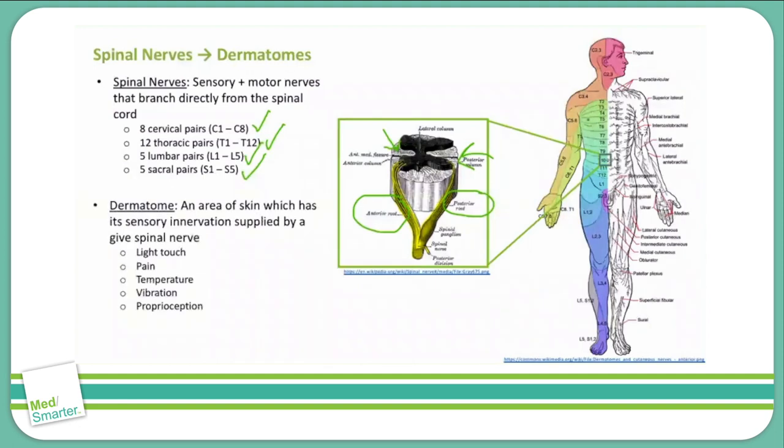A dermatome is an area of skin whose sensory innervation is supplied by a particular spinal nerve. The afferent signal for various sensations of the skin — including light touch, pain, temperature, vibration, and proprioception — are organized by dermatomes.